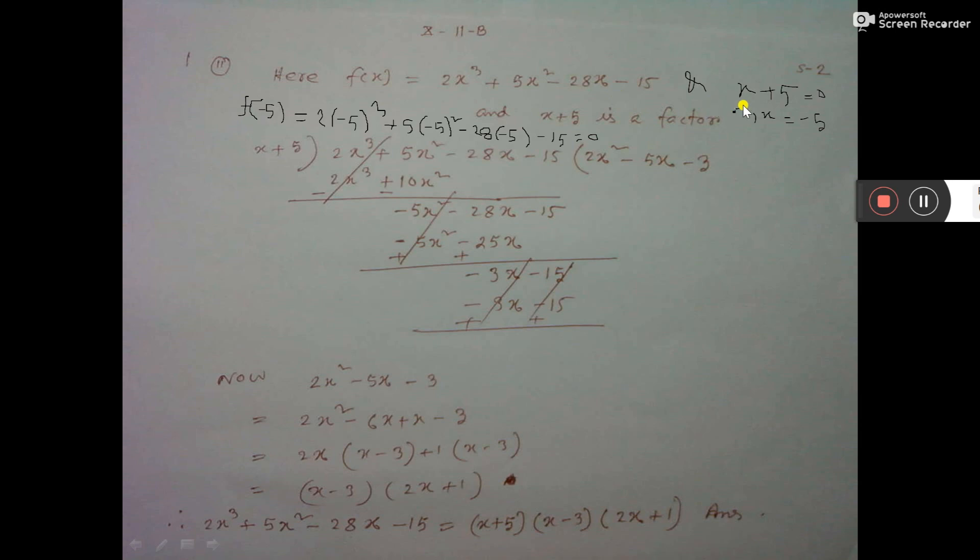This f(x) equal to this and x plus 5 equal to 0 I have written. So x equal to minus 5. Now, if you put this minus 5 here, then you are getting 0. That means x plus 5 is a factor. Since x plus 5 is a factor, you take x plus 5 and divide this expression.